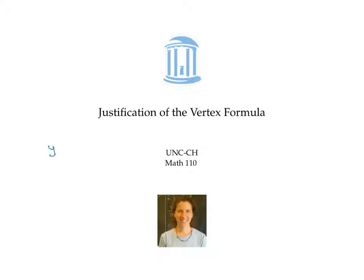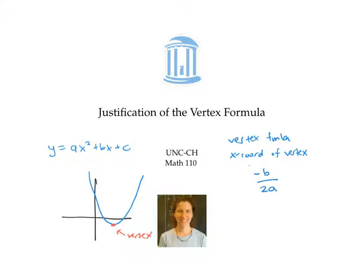Suppose you have a quadratic function in the form y equals ax squared plus bx plus c, and you want to find where the vertex is when you graph it. The vertex formula says that the x coordinate of this vertex is at negative b over 2a. This video gives a justification for where that formula comes from.